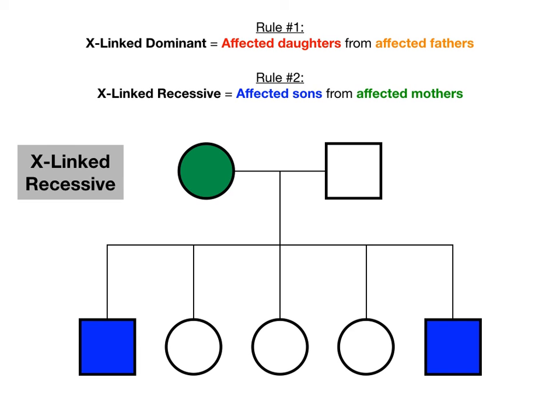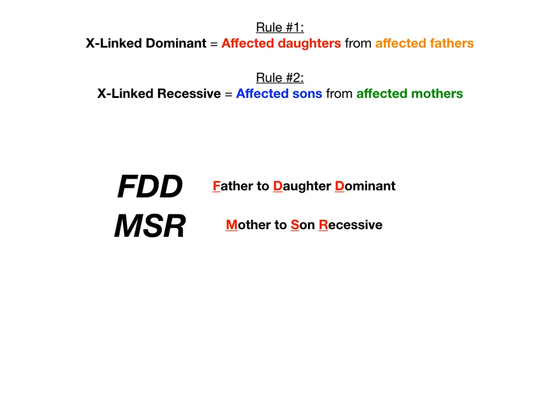To summarize the high-yield takeaway: when it comes to X-linked inheritance, figure out whether it's the father or mother who is the affected parent, and whether they're creating affected daughters or affected sons. To help memorize the two rules, use the mnemonic FDD and MSR — FDD is father, daughter, dominant, and MSR is mother, son, recessive. If it's father to daughter, it's dominant. If it's mother to son, it's recessive. Say it a couple of times fast and you'll never forget.